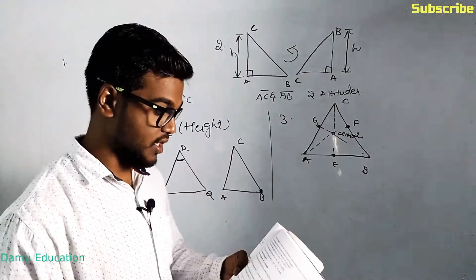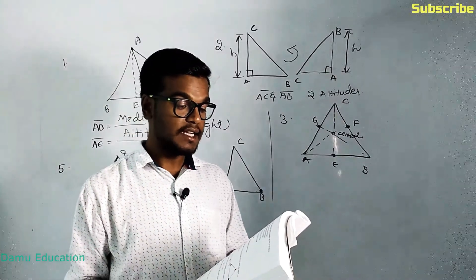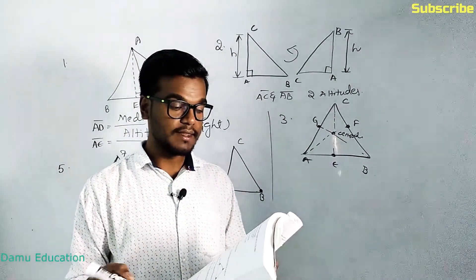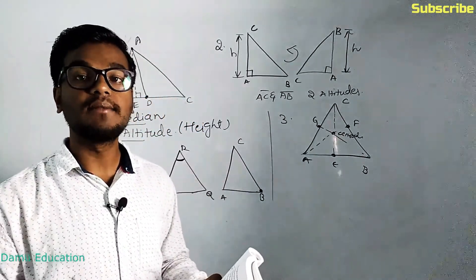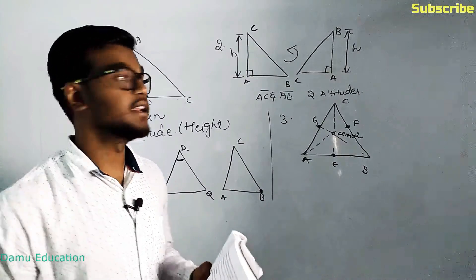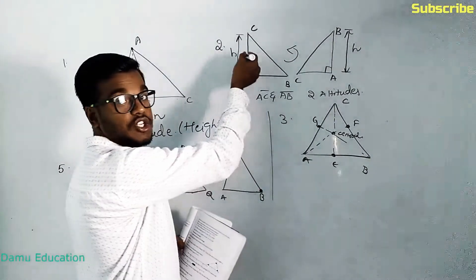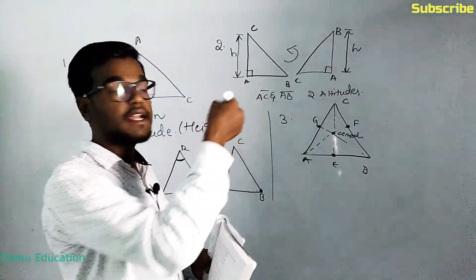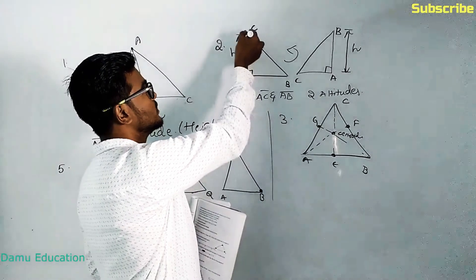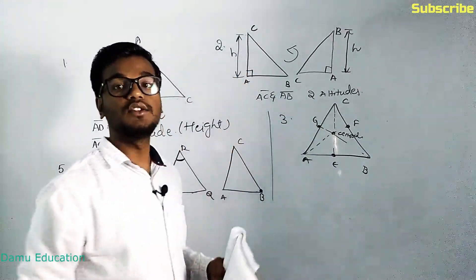Our fourth question is: does an altitude always lie in the interior of the triangle? No, sometimes it will be outside the triangle. For a right angle triangle, the altitude can fall outside the triangle.